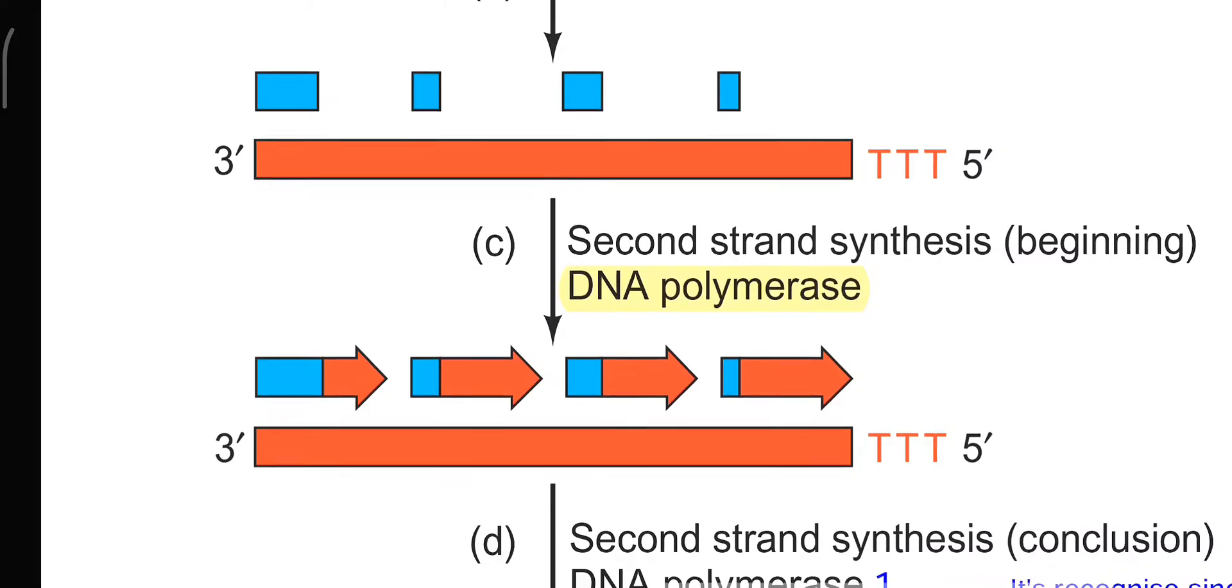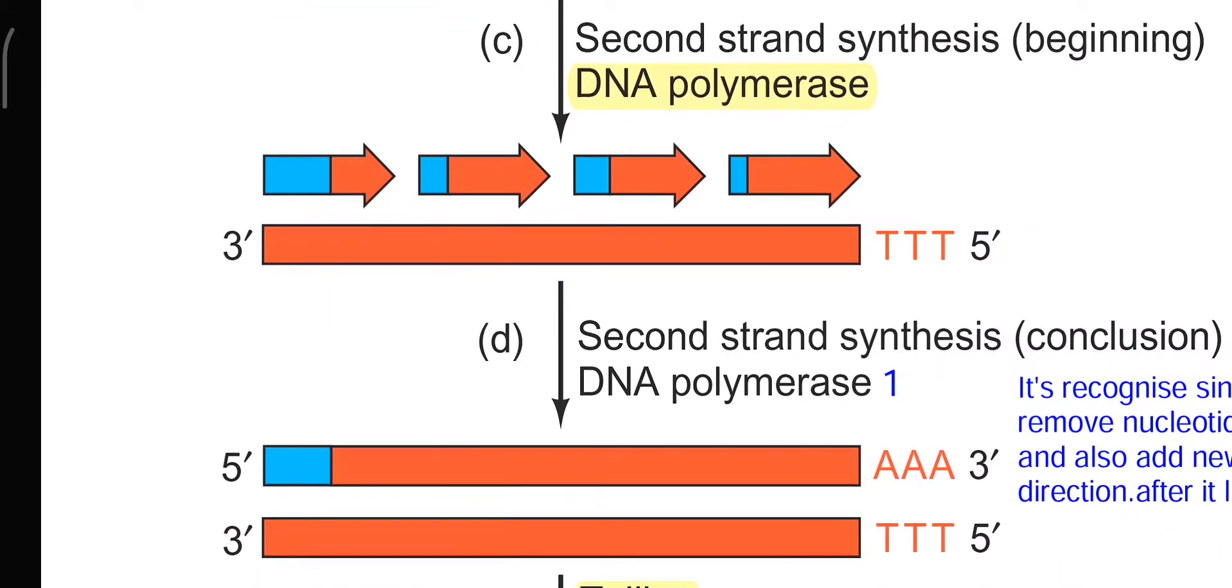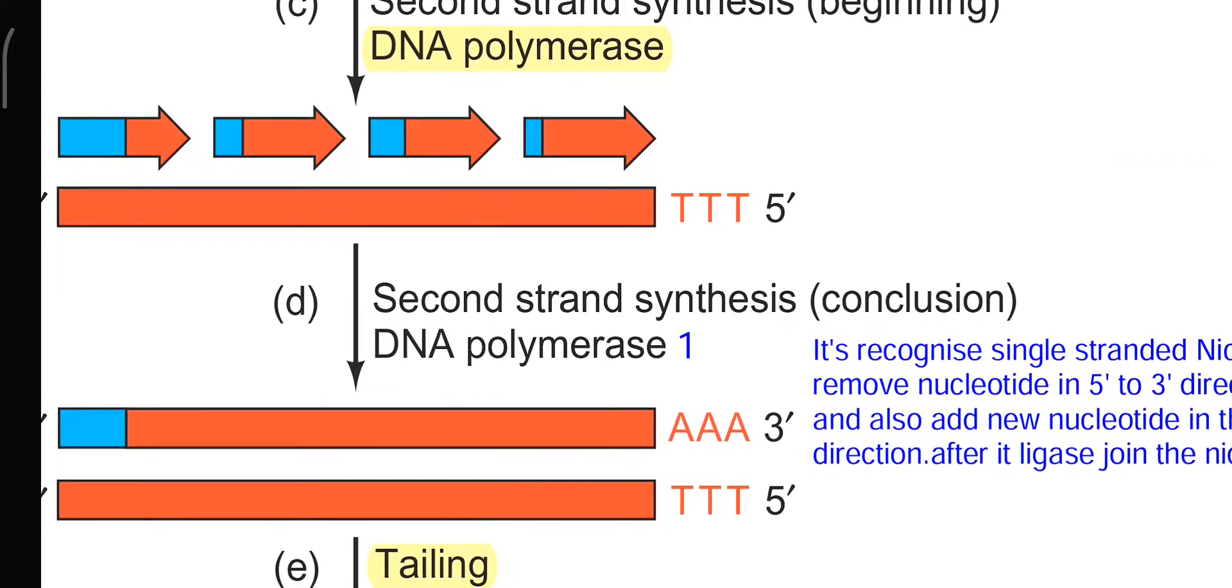Once it's done, the DNA polymerase I will be used. First, this enzyme removes and also makes the new nucleotide to add on in the 5' to 3' direction.